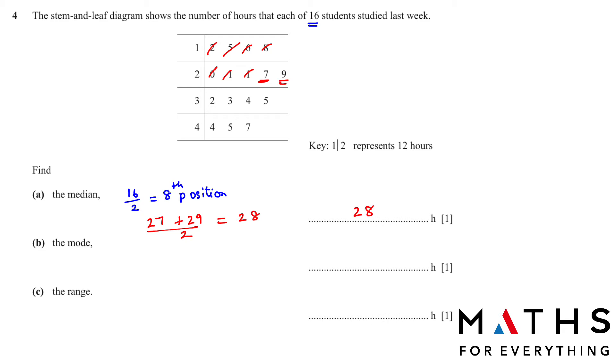Next is the mode. Mode is the most repeated number. So from here, we can see which is the most repeated number. 1 and 1 is there, so 2, 1, which is 21. The range. Range means the highest value minus the lowest value. Highest value is 47 minus the lowest value, which is 12. That will give us 35 as the answer.